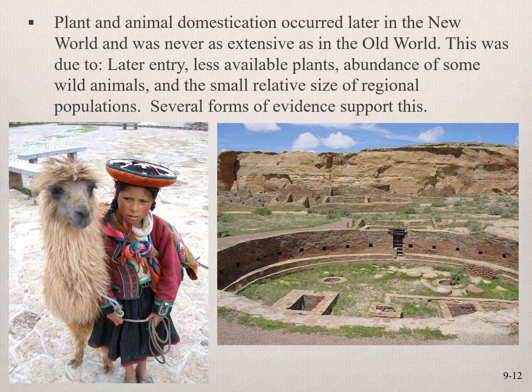Plant and animal domestication happened later in the New World and was never as extensive as in the Old World. People arrived there later and there were fewer domesticatable organisms available. It was also a pretty rich, abundant place to live as hunter-gatherers or horticulturalists, so intensive agriculture wasn't needed to support decent-sized populations. It wasn't until huge state-level societies started forming that it became really necessary to start with maize agriculture.